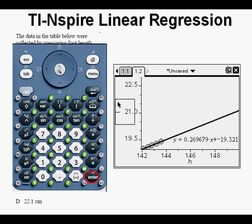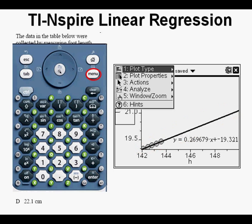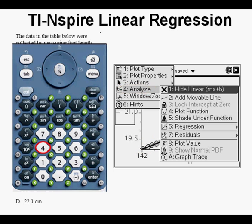Now we see a much larger window with all the points clumped together in the lower left corner. Now we press Menu. We see Analyze at option 4. Press 4.